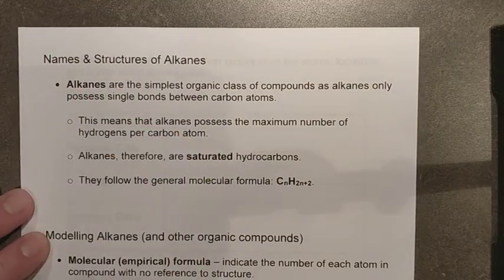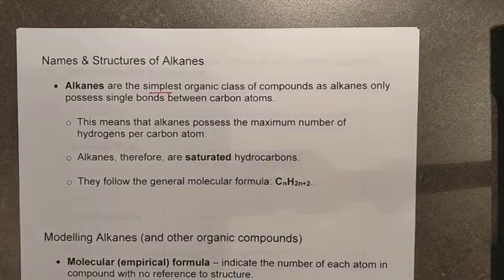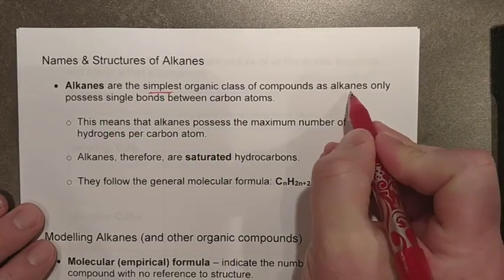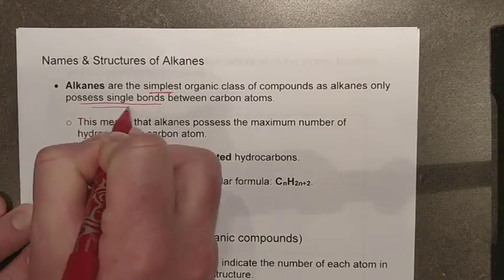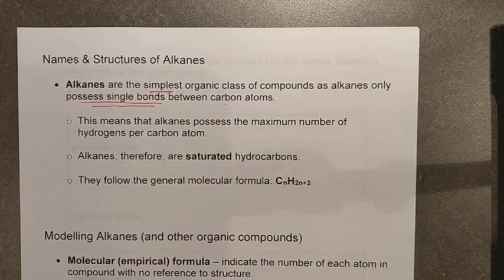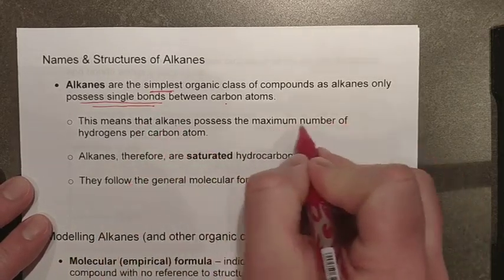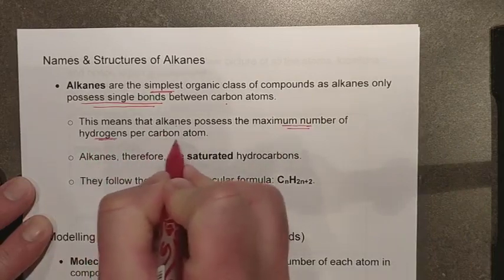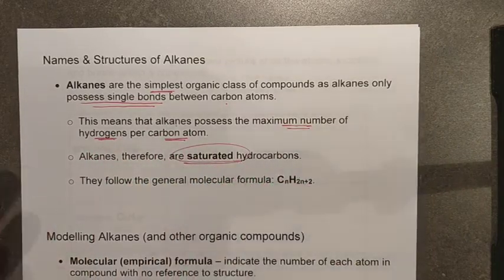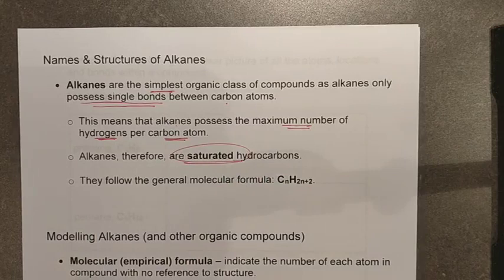Taking a close look at our first group, the alkanes — this is easily the most simple organic class of compound. They're simplified in the fact that they only possess single bonds between carbon atoms. This minimizes the amount of carbon-to-carbon bonds and maximizes the amount of hydrogens that fill carbon's bonding capacity. We identify an alkane as possessing the maximum number of hydrogens per carbon atom. This is known as a saturated hydrocarbon — the carbon has a maximum amount of attached hydrogens, so there is no room to attach any other atoms anywhere in the chain.